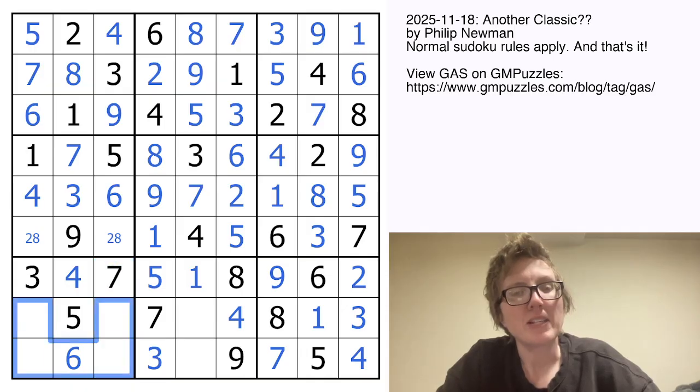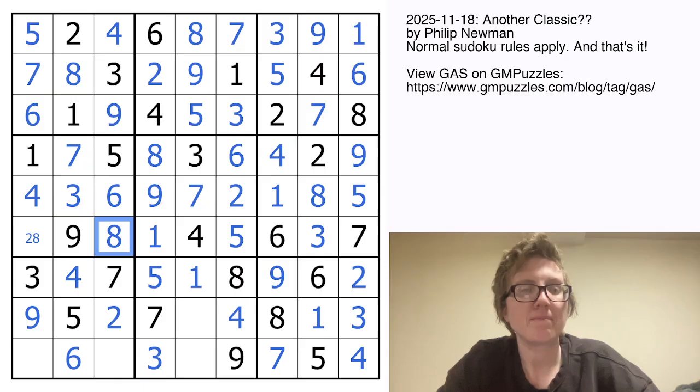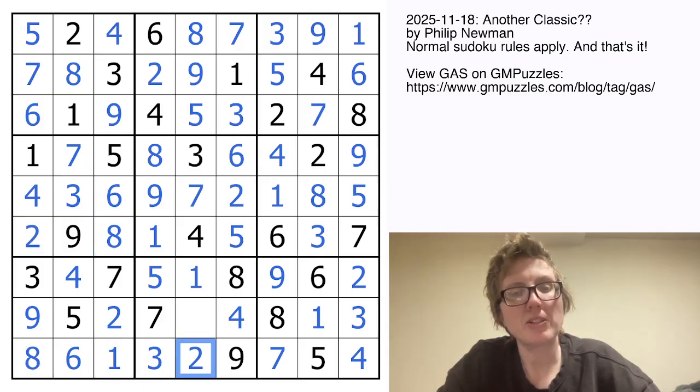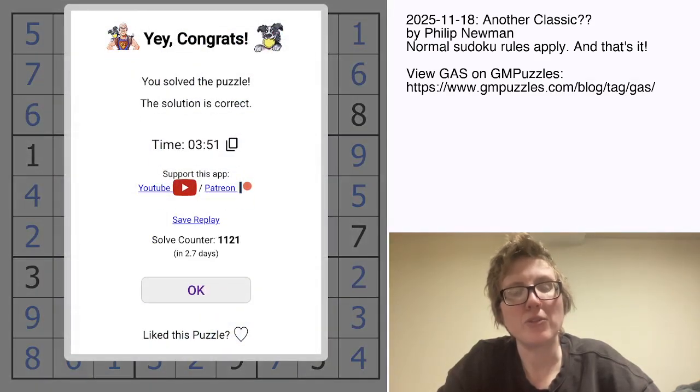And in this region, I need a one, two, eight, and nine. I already have a one and eight in row eight, so that'll be a two and a nine. One and eight. And my last two digits with classic Sudoku are a two and a six.